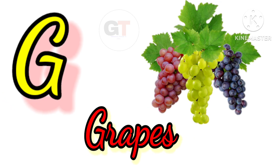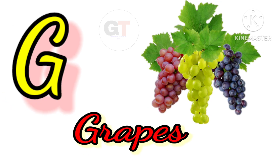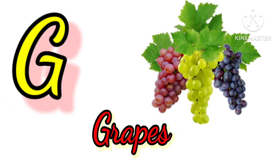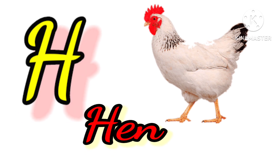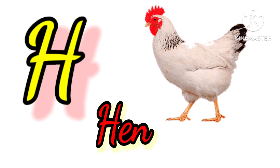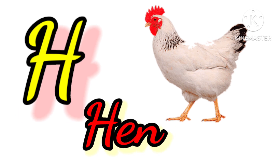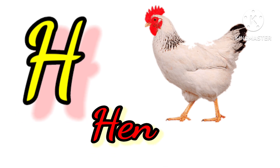G for grapes, grapes means angoor. H for hen, hen means murgi.